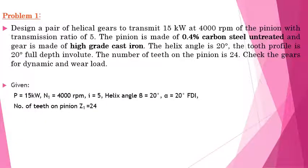Noting down the given details: the power is 15 kW, the pinion RPM is 4000, and the transmission ratio (velocity ratio) is 5. The materials are given but the stress values we need to take from the table. The helix angle beta is 20 degrees. The tooth profile is 20 degree full depth involute. The number of teeth on the pinion Z1 is given in the problem.